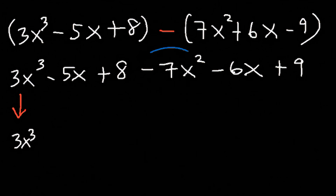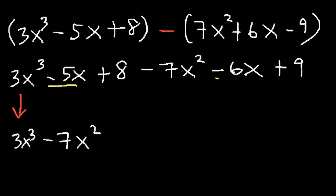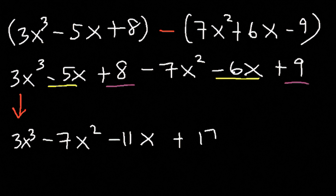Likewise, the negative 7x squared term is one of a kind, so we just rewrite it. Now we can combine the x terms: negative 5 minus 6 is negative 11. And 8 plus 9 is 17. So this is the answer: 3x cubed minus 7x squared minus 11x plus 17.